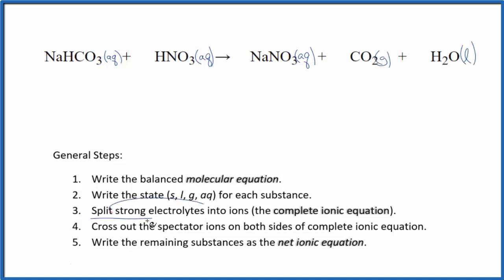Now we can split the strong electrolytes into their ions for the complete ionic equation. Sodium on the periodic table, that's in group one, has a one plus. And this HCO3, this bicarbonate ion, the whole thing has a one minus.